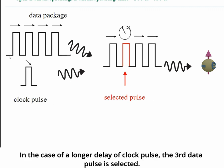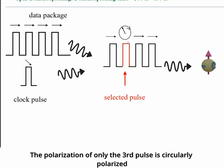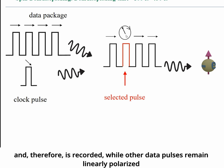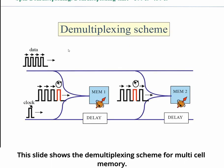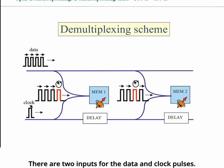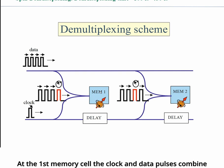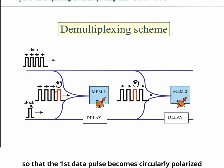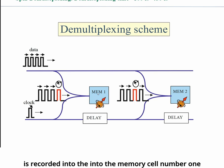In the case of a longer delay of the clock pulse, the third data pulse is selected. The polarization of only the third pulse becomes circularly polarized and is therefore recorded, while other data pulses remain linearly polarized and have no influence on the data recording. This slide shows the demultiplexing scheme for multi-cell memory. There are two inputs for the data and clock pulses. At the first memory cell, the clock and data pulses combine so that the first data pulse becomes circularly polarized, and the data of only that pulse is recorded into memory cell number one.